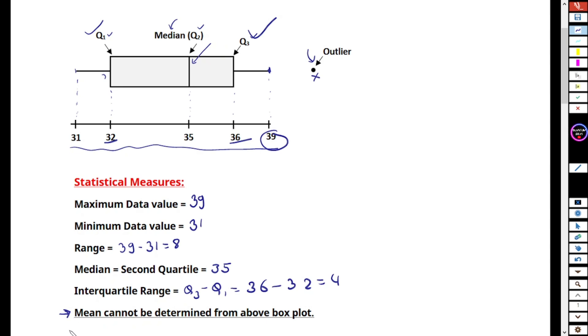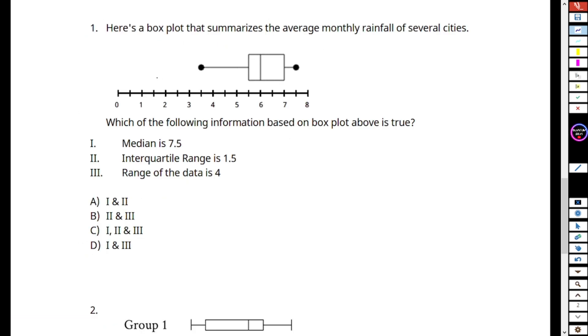So again let me summarize. Basically, box and whisker plot is the distribution of the data in the form of whisker and box, and it gives the information like median, quartiles, and percentiles. So let's do some problems. I think I have two problems here.